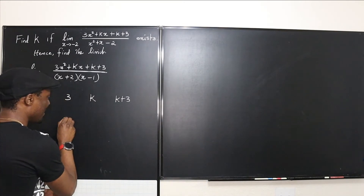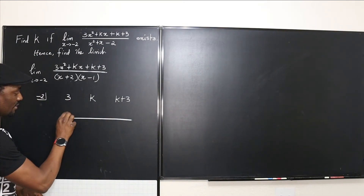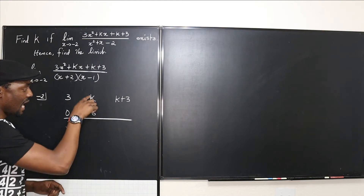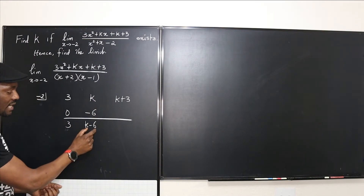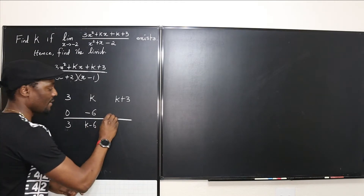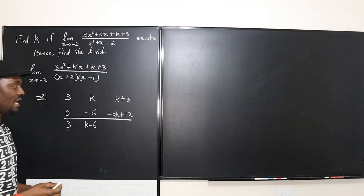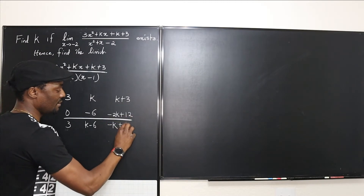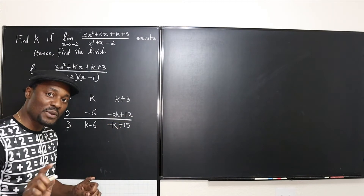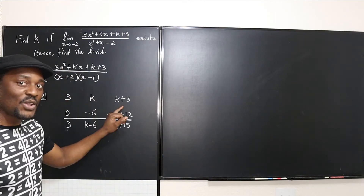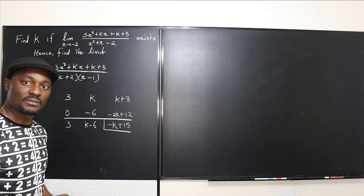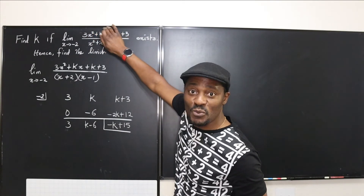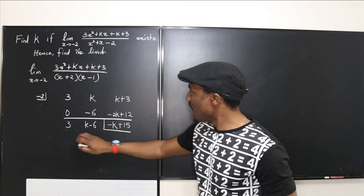Let's carry out the synthetic division. Drop down the 3. Multiply 3 by -2 to get -6; add to k to get (k - 6). Multiply (k - 6) by -2 to get (-2k + 12). Add to (k + 3): k + (-2k) = -k, and 3 + 12 = 15, giving a remainder of (-k + 15). Now, since (x + 2) must be a factor, this remainder must equal 0 — that was our original assumption for the limit to exist.